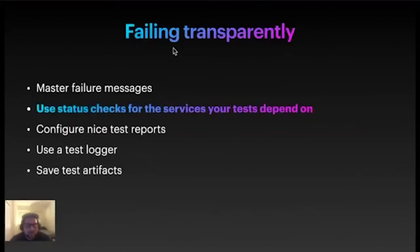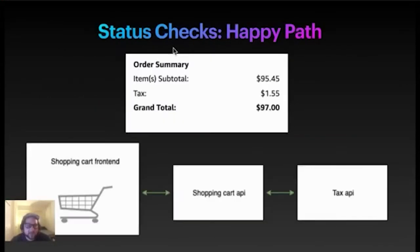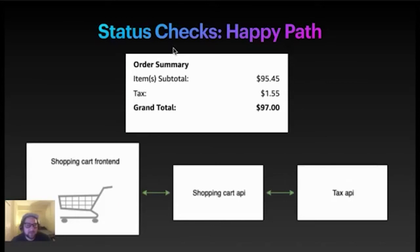Another thing I would posit you need to do to fail transparently is use status checks for the services your test depends on. To describe status checks, I'm going to talk about this sample app. Let's pretend we have a shopping cart here where it gives you your item subtotal, the tax, and the grand total. This is your shopping cart front end application. Under the hood, the front end hits the shopping cart API, which hits the tax API to get all of the data that it needs. The shopping cart API assembles all the data from the tax API and various databases and sends it to the front end.